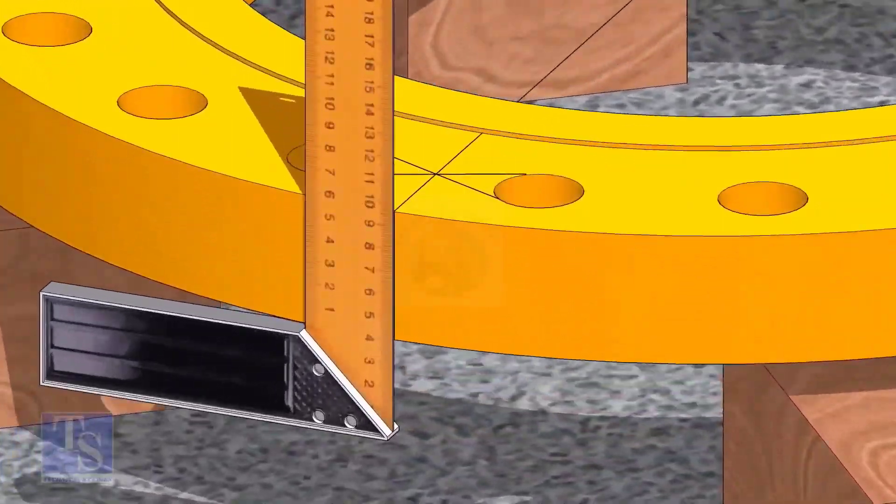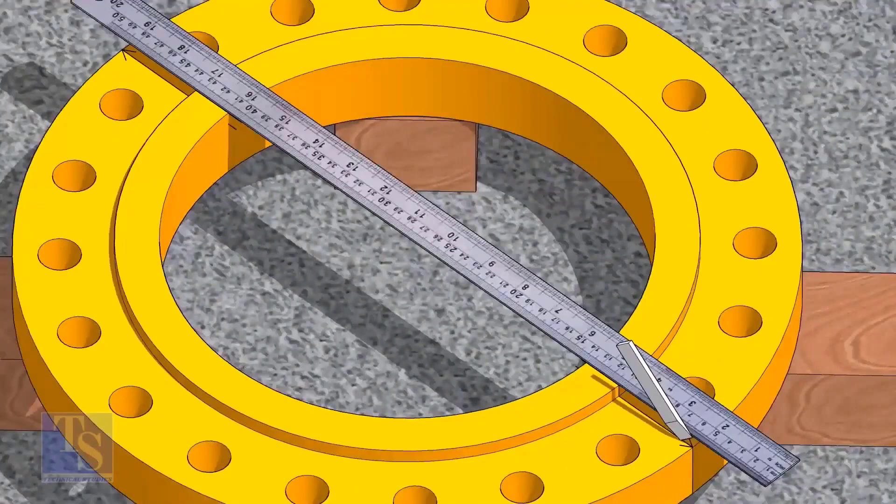Now, transfer the center line to the sides of the flange. Overturn the flange and transfer the center line on the back side of the flange.